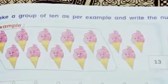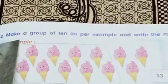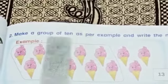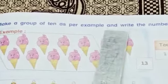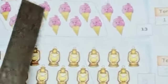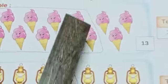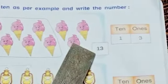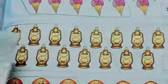Workbook page number 99, Exercise 2: Make a group of 10 as per example and write the numbers. 1, 2, 3, 4, 5, 6, 7, 8, 9, 10, 11, 12, 13, 14, 15. 1, 5, 15. 1, 10, 5.